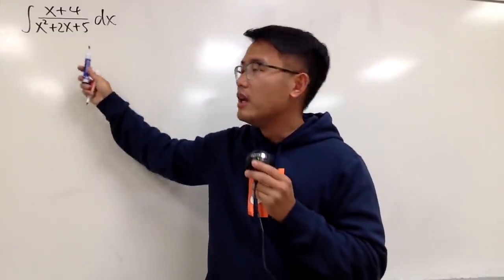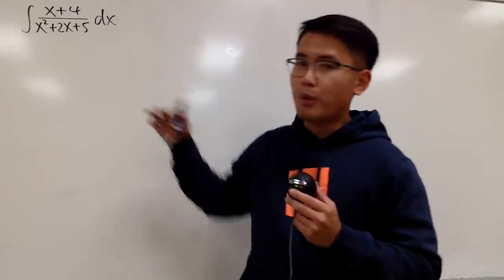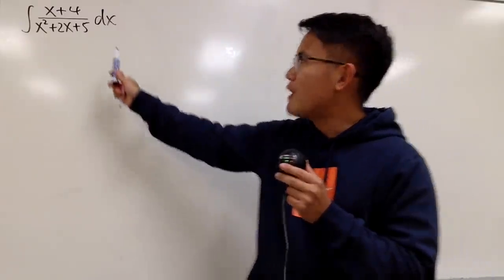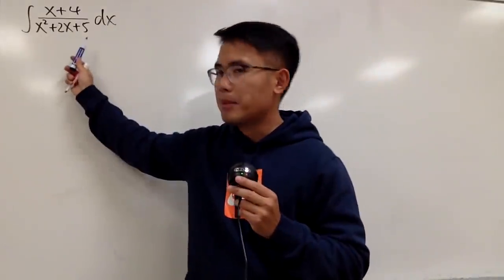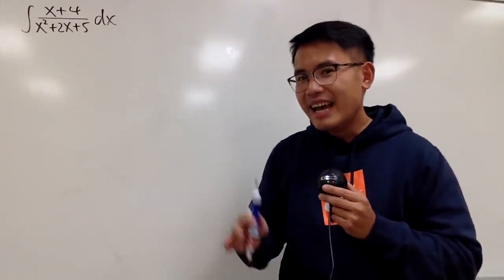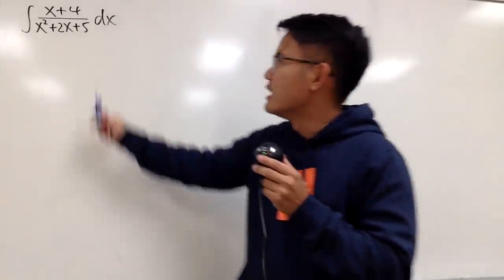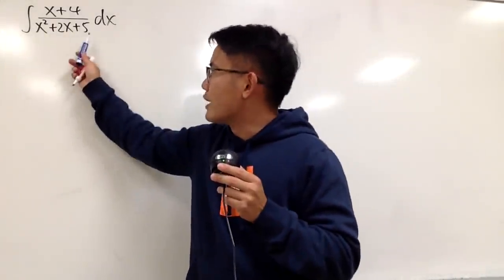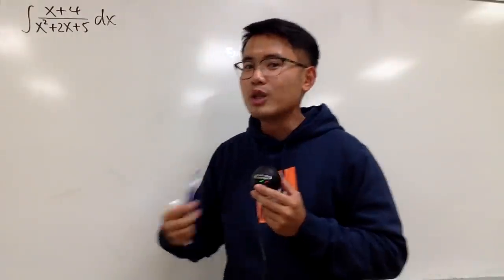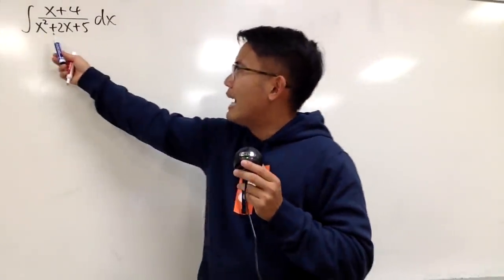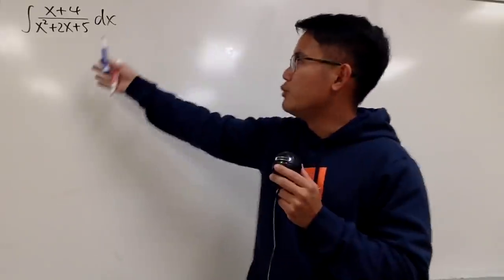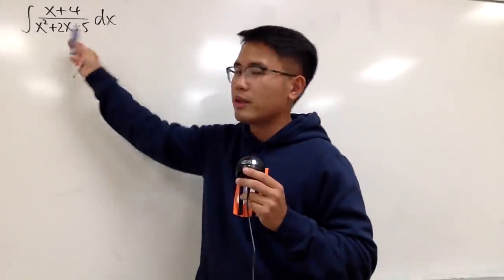Here we have a rational function, so we should try to do partial fractions. However, can we factor out the denominator? Unfortunately not. And in fact, the worst thing is that this quadratic doesn't have any real roots. So the way to deal with this is that we will have to complete the square for the irreducible quadratic situation.